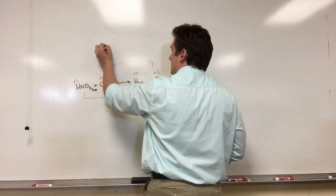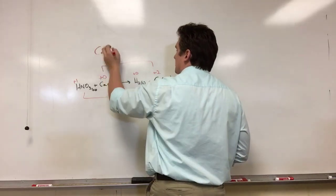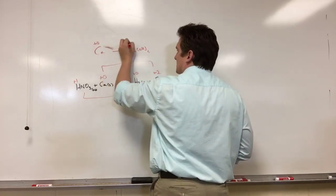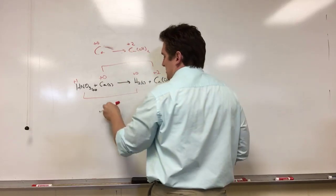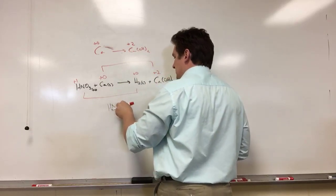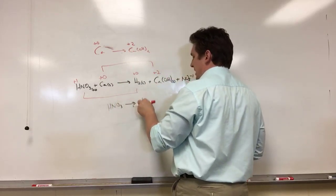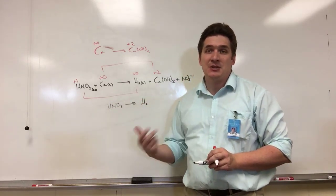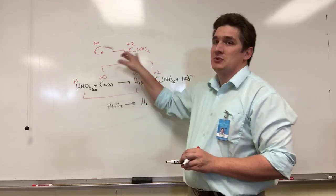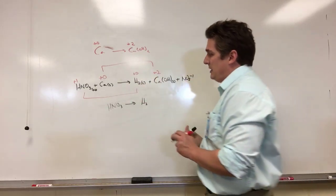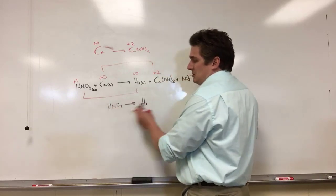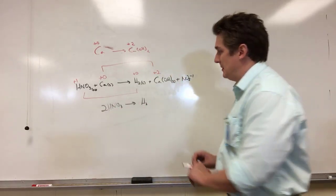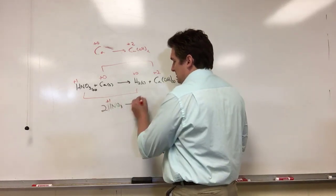We've got calcium solid going to Ca(OH)2, and we've got HNO3 going to H2. Once again, we need to make sure we balance the species that are being oxidized and reduced. We have one calcium on both sides so we're fine. Up here for the HNO3, we've got one hydrogen here and two here, so we need to double up to give us 2HNO3.